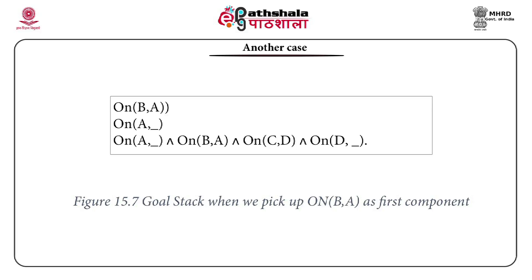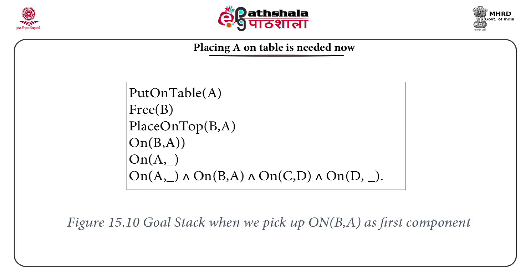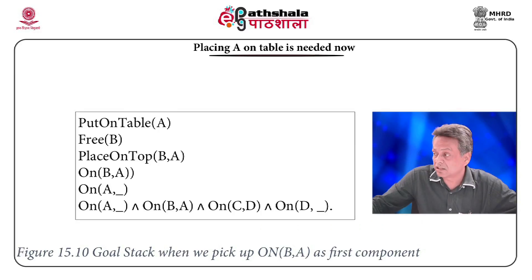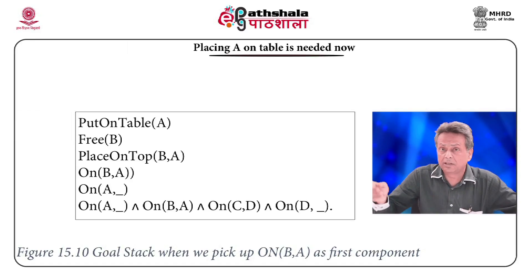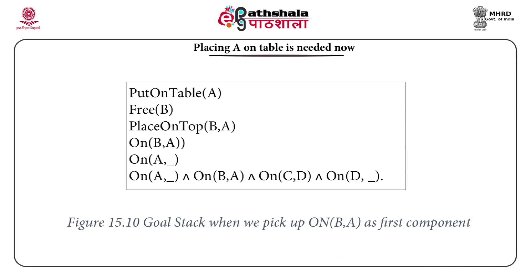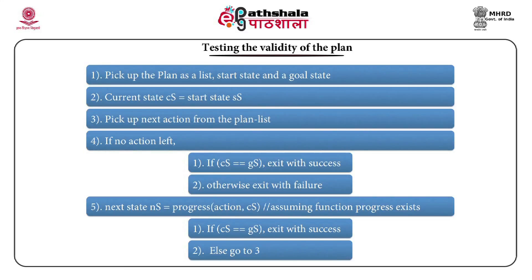However, there is a catch: if the goals are ordered differently — on(B,A) before on(A,table) — it is not as straightforward. To solve on(B,A) first, you need free(B), but A is resting on top of B, so A must be placed on the table first to achieve free(B). Then you place B on top of A to get on(B,A). Then you check on(A,table) and find it is already achieved. So it still works but takes more steps. Even in this simple problem, ordering matters.